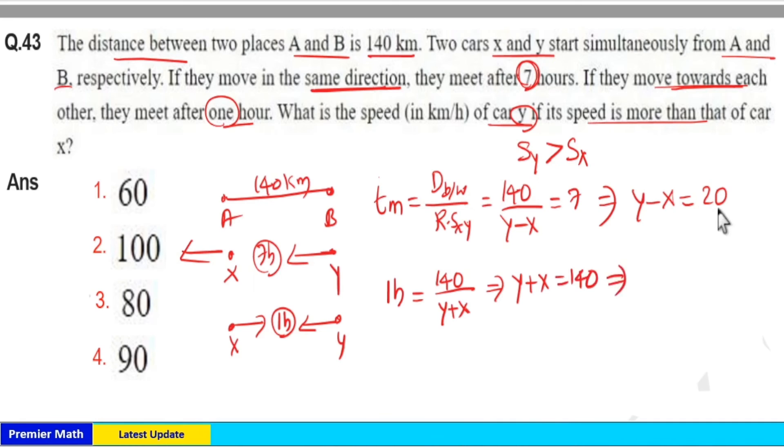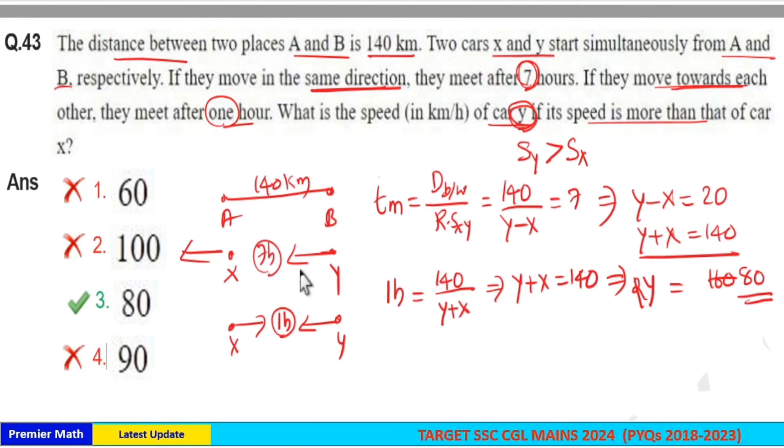So Y minus X equals 20 and Y plus X equals 140. From this, we can find Y. Adding these equations: 2Y equals 160, so Y equals 80. Option 3 is the answer. You can directly apply Y minus X equals 20 and Y plus X equals 140 without needing the diagram.